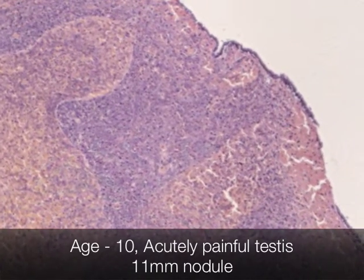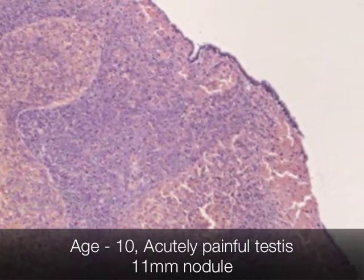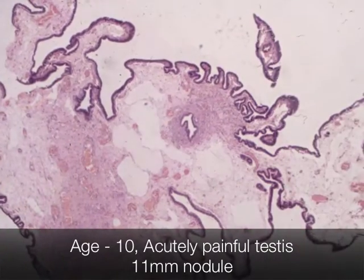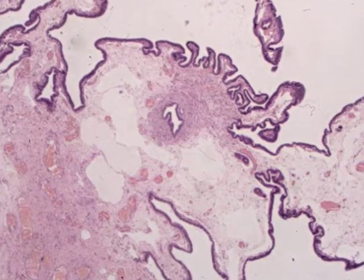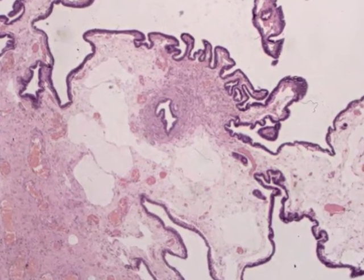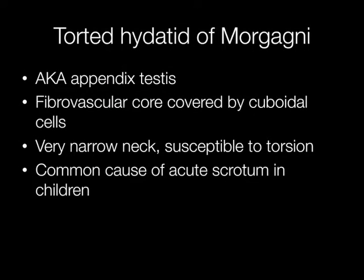This is an example of a very frequent specimen that we see in urological pathology — the hydatid of Morgagni, otherwise known as appendix testis. The problem with these structures is that they have a very narrow neck, making them particularly susceptible to torsion. You can see in the first picture that the appendix testis has become extremely congested as a result of torsion. This condition is a very common cause of acute scrotum in children.